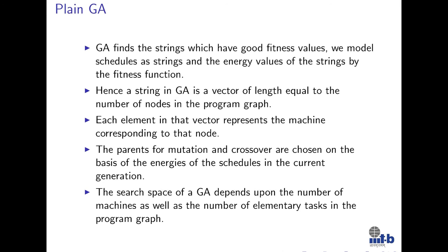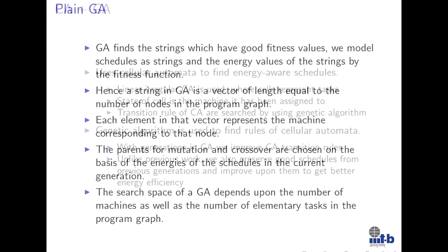The mutation rule uses a Gaussian distribution with zero mean and a variance which reduces with the number of generations. The crossover is random in the sense that it arbitrarily chooses portions from the first and second parent. The search space of GA depends upon the number of machines as well as the number of elementary tasks in the program graph.